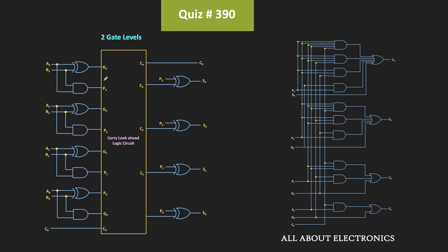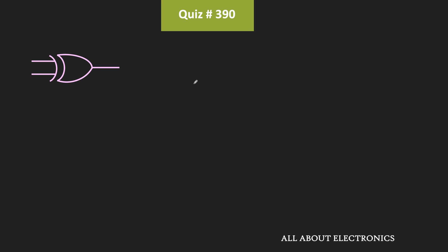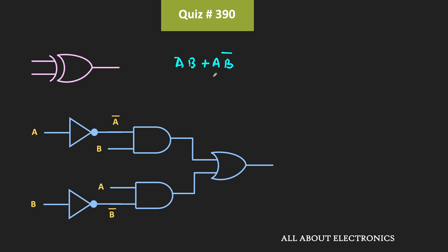Now let us find the time required to implement the XOR gate. If A and B are inputs, the XOR output is A-bar·B + A·B-bar. If implemented using AND, OR, and NOT gates, we require three gate levels. The NOT gate has one time unit delay while AND and OR have two time units each, giving a propagation delay of five time units.